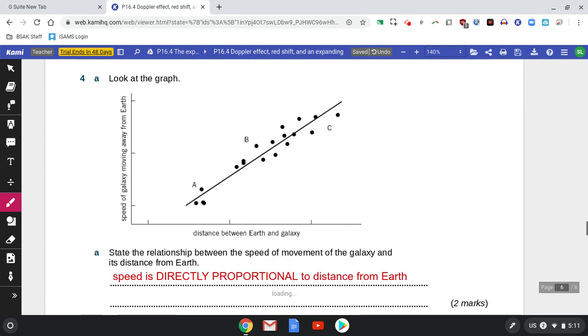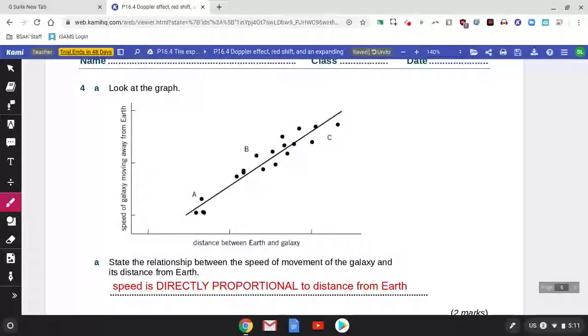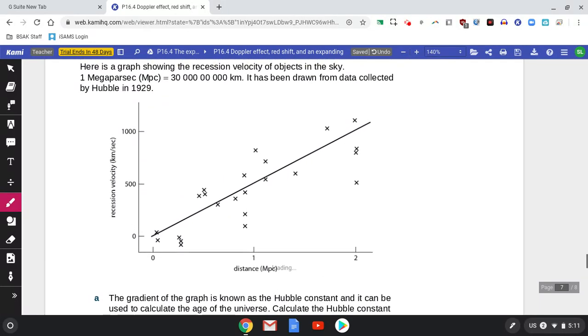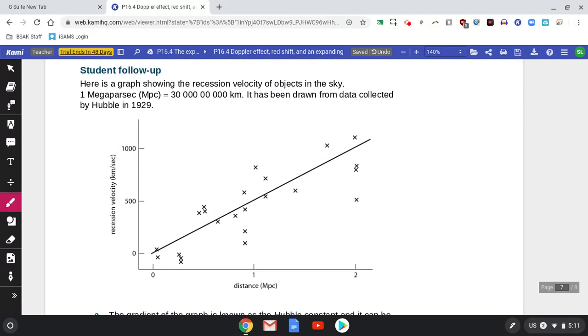A couple of you had to look at the extension question. This is the graph that Hubble plotted. Now as you can see, the points—you've got the straight line through the middle but the points are all over the place.